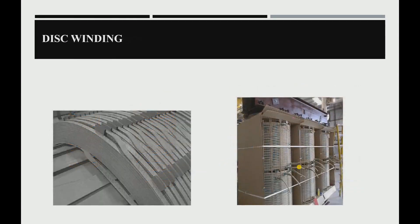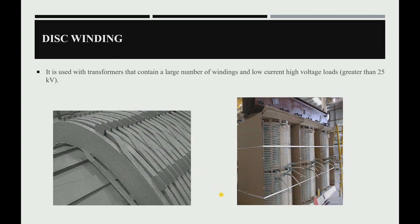The second formation is called the disk winding — as if we have a group of disks around the transformer core. This type is used with high power rating transformers, when we have a large number of turns and low current, or more specifically, high voltage loads greater than 25 kilovolts.